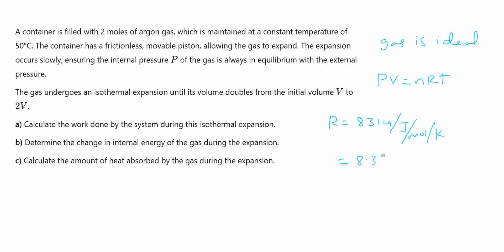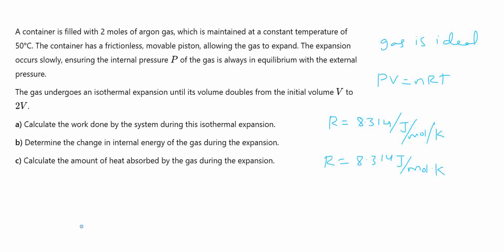In thermodynamics, units are important. We know PV = nRT. For the first question — calculate the work done by the system during isothermal expansion — I am taking the convention that when W is greater than zero, work is done on the system.